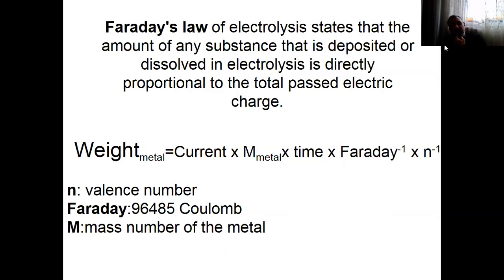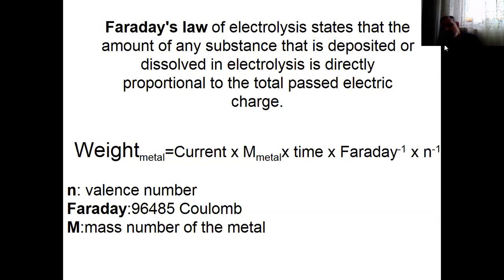Faraday's law of electrolysis states that the amount of material deposited or dissolved in electrolysis is directly proportional to the total electric charge passed. The weight can be calculated using the formula: W = (I × M × t) / (F × n), where I is the current, M is the molar mass of the metal, t is the time in seconds, F is Faraday's constant (96,485 C/mol), and n is the valence number — the number of electrons involved in the reaction.